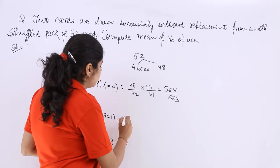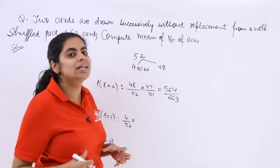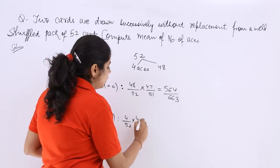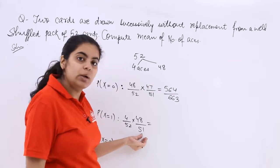So X equals 1 means 1 from the ace category. So 4 over 52 multiply by 1 from the non ace category. Non ace category still has 48 cards but the total is now 51.